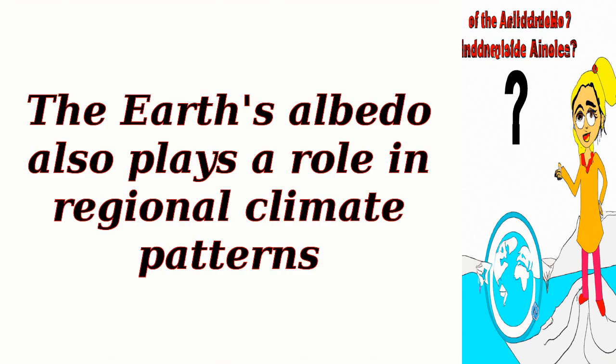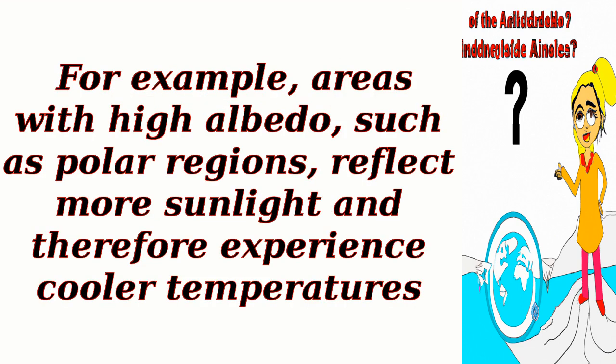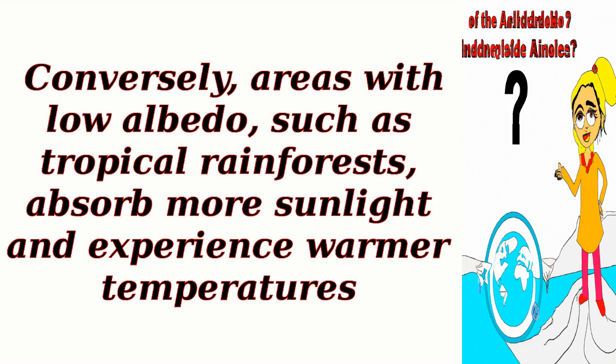The Earth's albedo also plays a role in regional climate patterns. For example, areas with high albedo, such as polar regions, reflect more sunlight and therefore experience cooler temperatures. Conversely, areas with low albedo, such as tropical rainforests, absorb more sunlight and experience warmer temperatures.